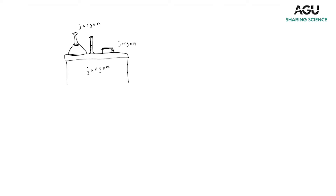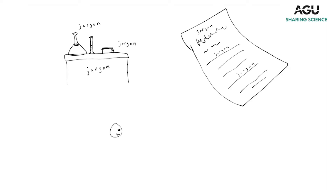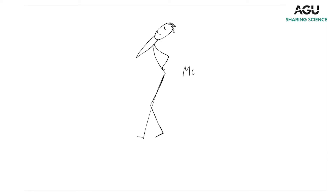Now you've identified your audience — what do you say to them? Or, what don't you say? This gets into jargon, and jargon is everywhere. It's pervasive — it's not just in the sciences. Think about the words that you use. There are a lot of words that aren't really long or really technical but have multiple meanings, like modeling, mean, or sheer. So just keep that in mind.